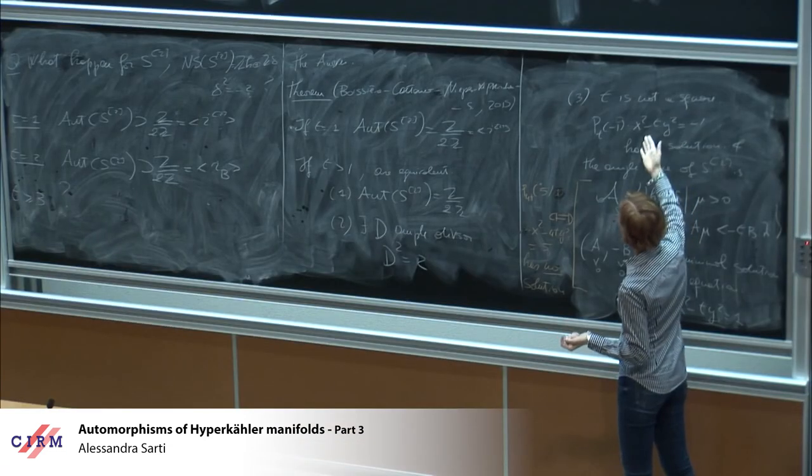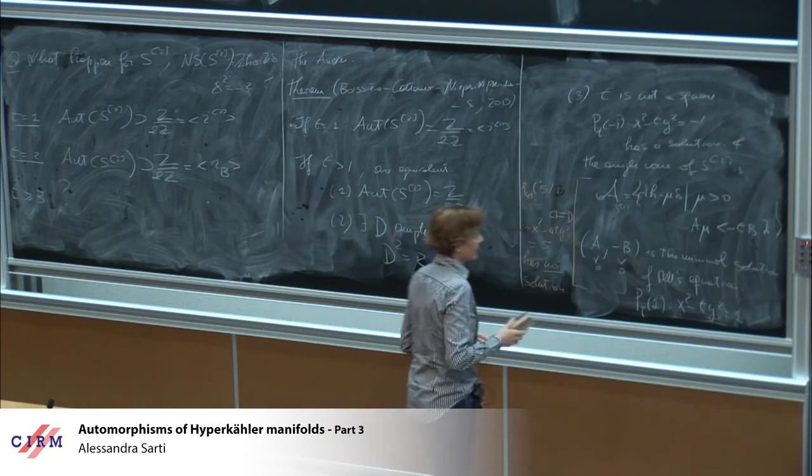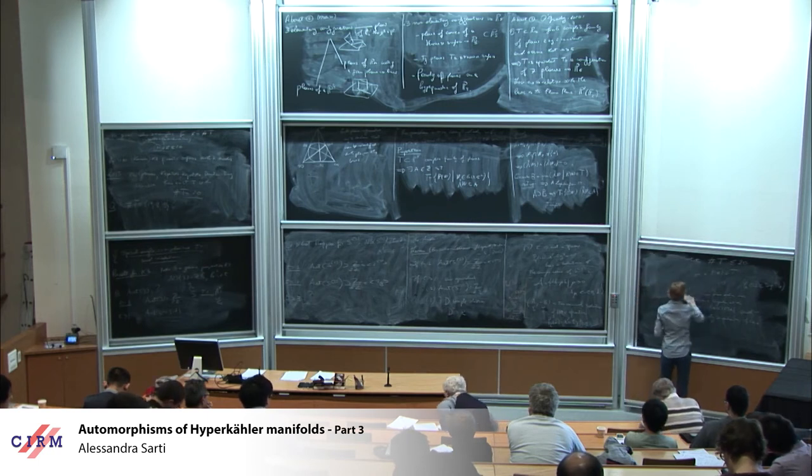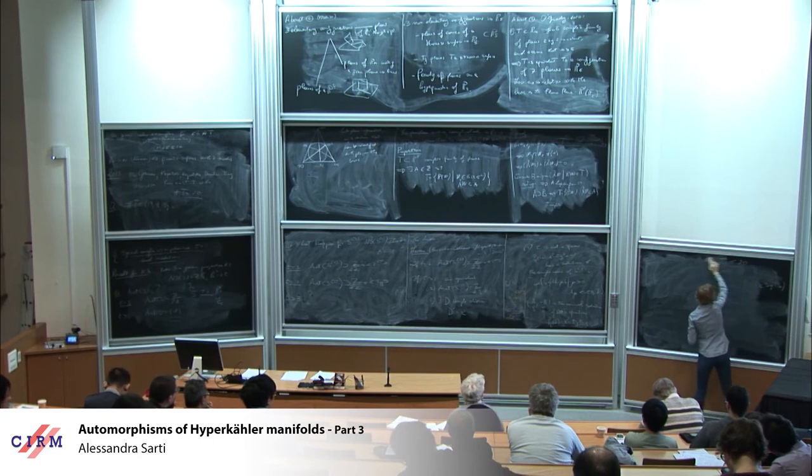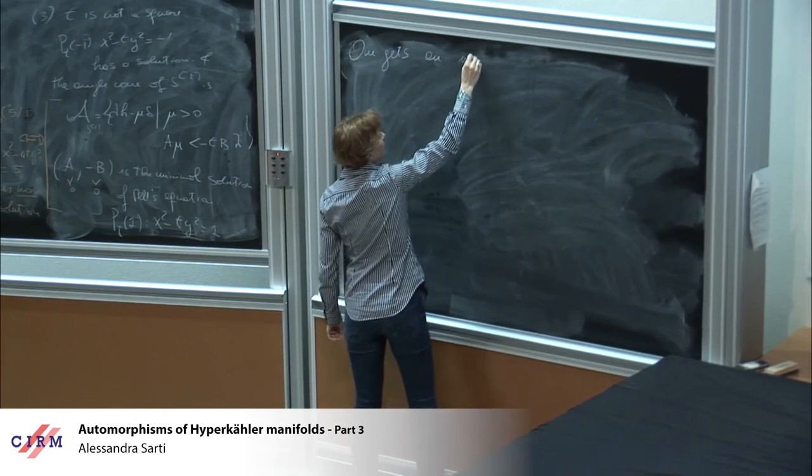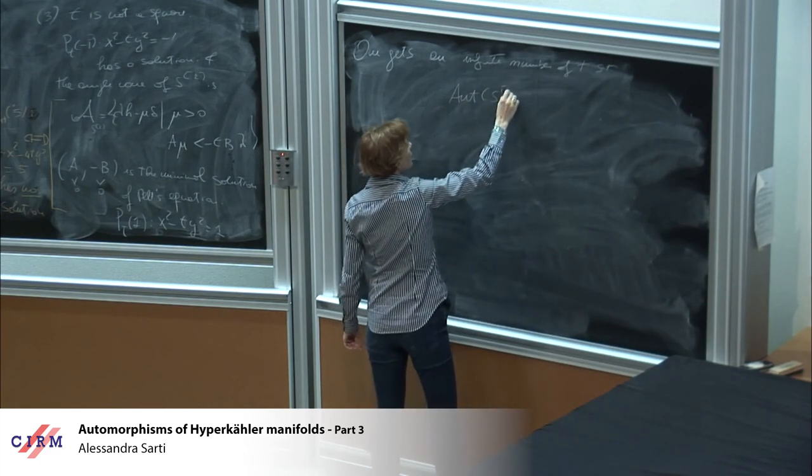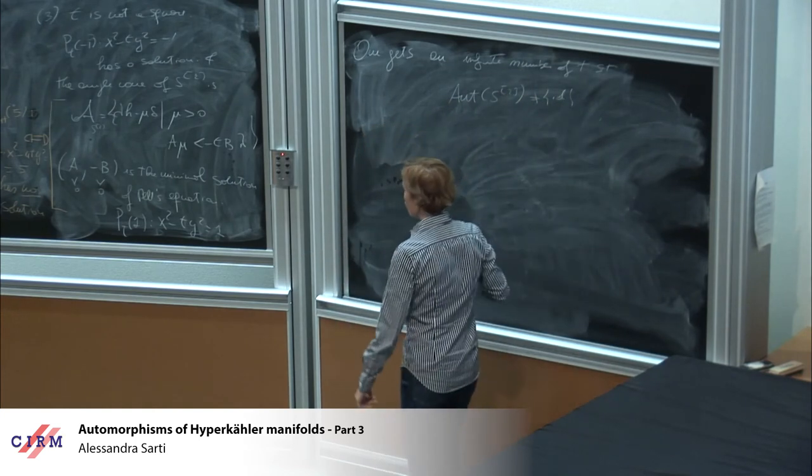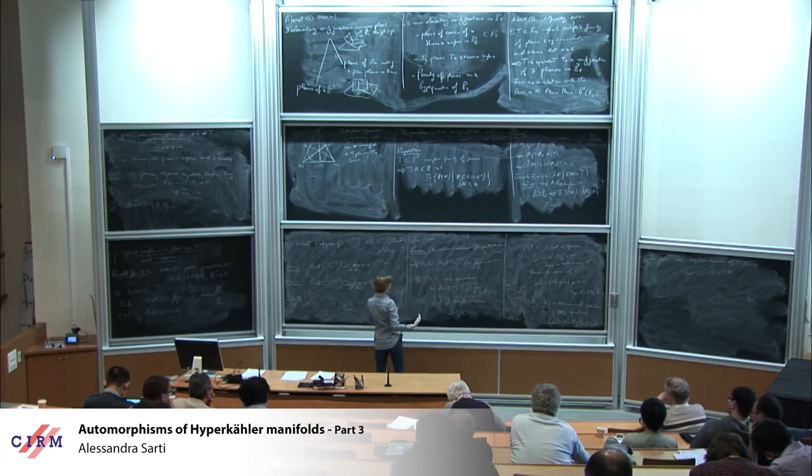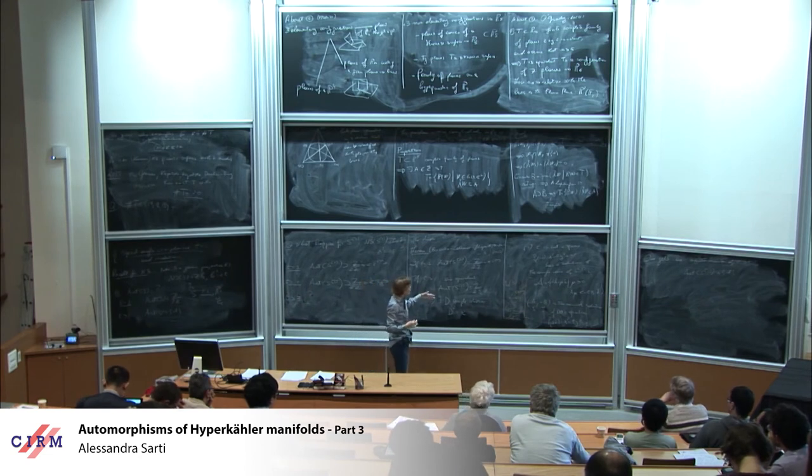So the answer, the following theorem with some collaborators, van Geemen, Sarti, Cattaneo, Niklas-Kirchen, and myself in 2015. So we have always the same assumptions. And we show that here, in fact, we have equality. So if t is equal to one, then we have that Aut S2, there is nothing more than the natural involution. And if t is bigger than one, so there are some equivalent conditions to have an automorphism.